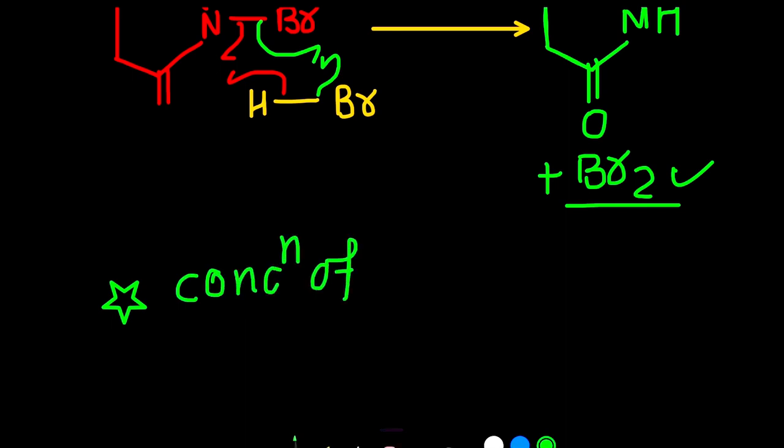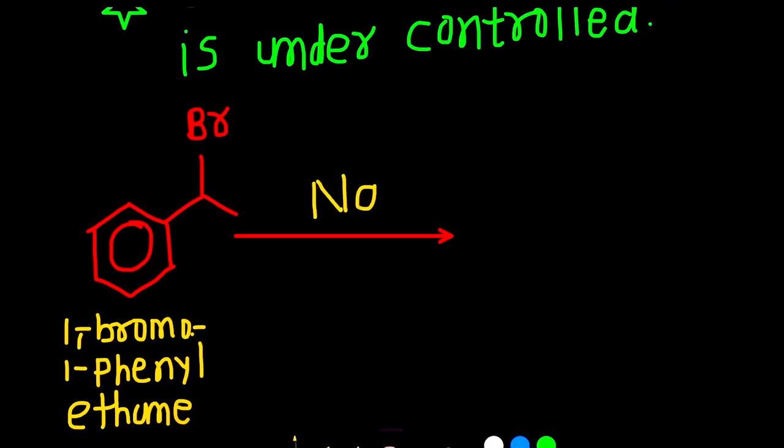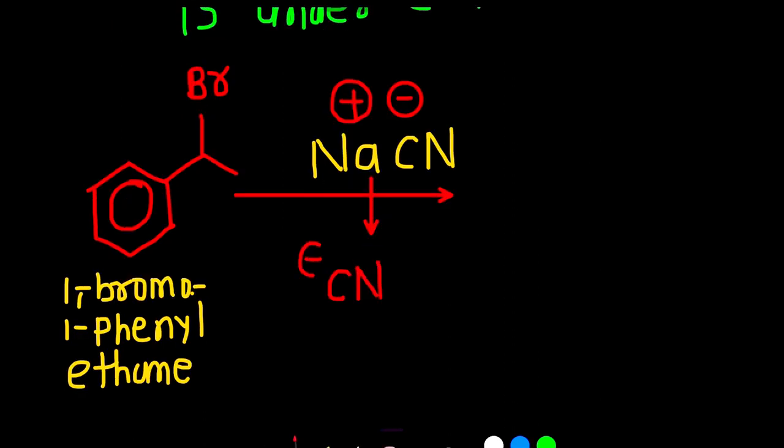When we add NaCN to this alkyl bromide, then the substitution reaction will take place. CN- is strong nucleophile. The carbon will attack this carbon, and bromine is good leaving group. It will be removed. That's why this is called substitution reaction. One group is added and second group is removed.